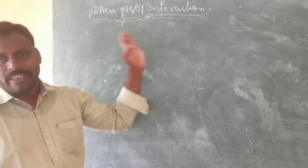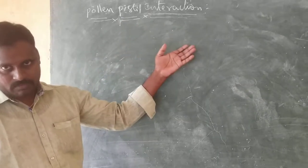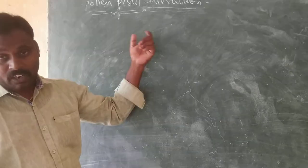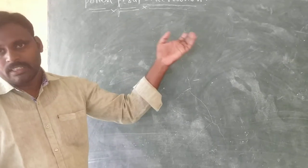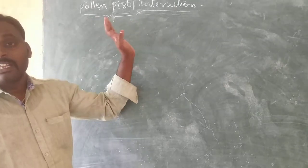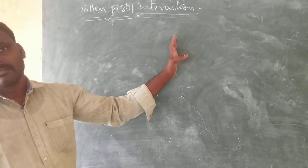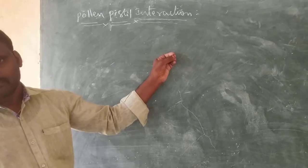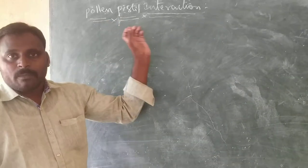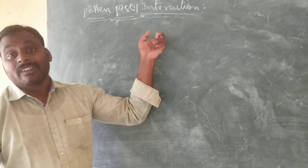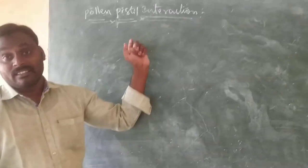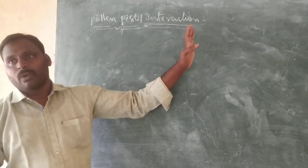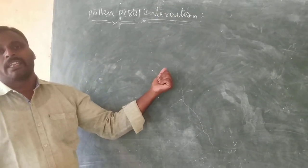What is pollination? Transfer of pollen grains from anther to stigma is called pollination. But pollination does not guarantee it transfers the right pollen grain. After pollination, plants may receive two types of pollen grains: it may be compatible pollen grain, or it may be incompatible pollen grain.